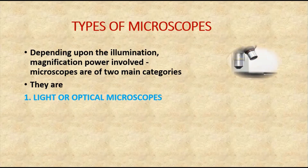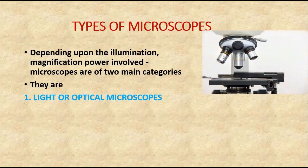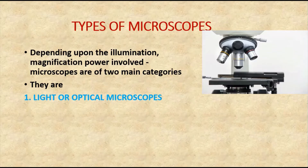Number one is the light microscope, where magnification is achieved with the help of an optical lens system. This group includes the bright field microscope, dark field microscope, phase contrast microscope, fluorescent microscope, ultraviolet, and interference microscopes — all coming under the category called light or optical microscope.